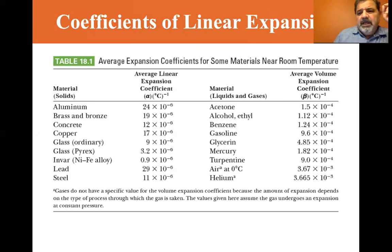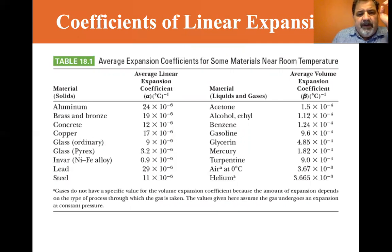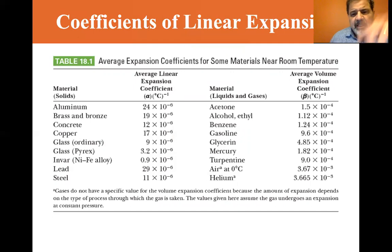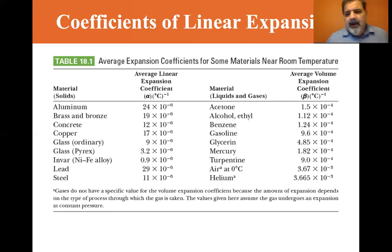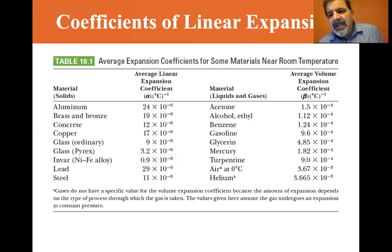Here are some average coefficients of expansion: aluminum is 24×10⁻⁶, brass and bronze is 19×10⁻⁶, concrete is 12×10⁻⁶. For liquids: acetone is 1.5×10⁻⁴, alcohol is 1.12×10⁻⁴, gasoline is quite high at 9.6×10⁻⁴ — remember that. Turpentine is also high at 9.0×10⁻⁴.